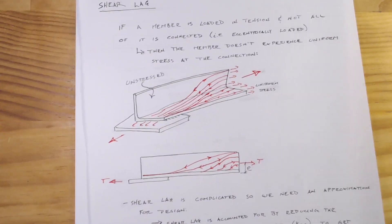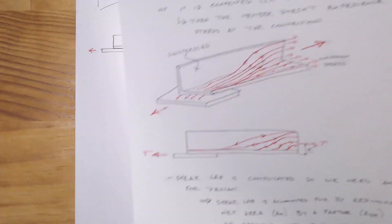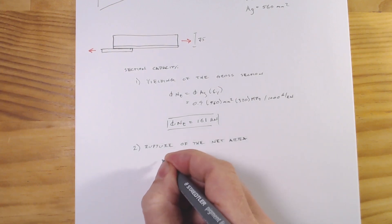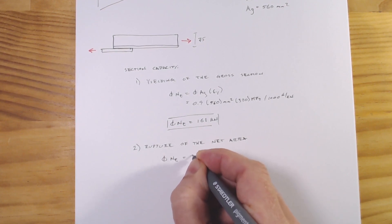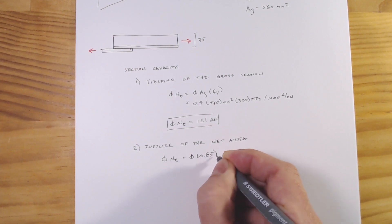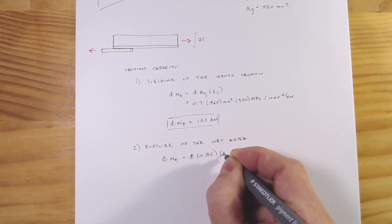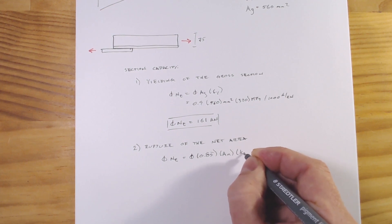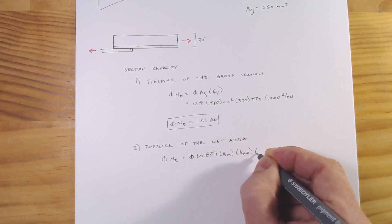That's because this is where we're worried about tearing out at this portion because we're really overloading that section compared to what we are further out away from this eccentric connection. So we get φNst is going to be φ times 0.85 times our net area times kte times our ultimate stress.